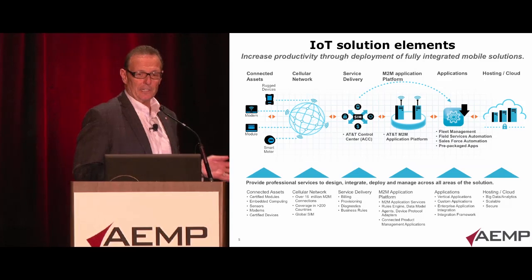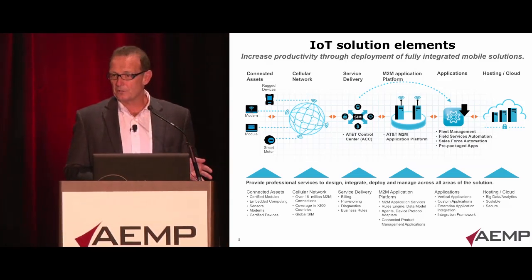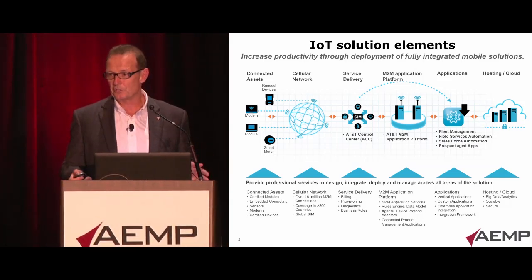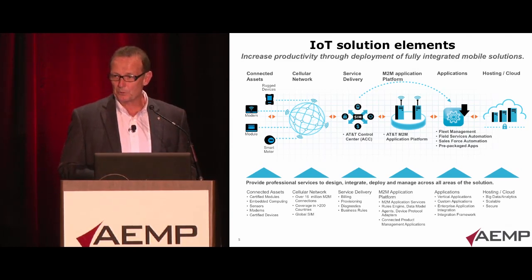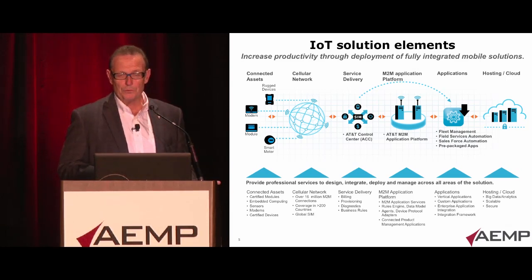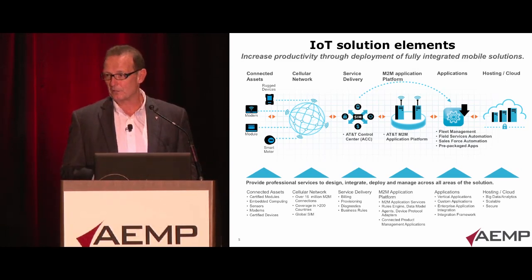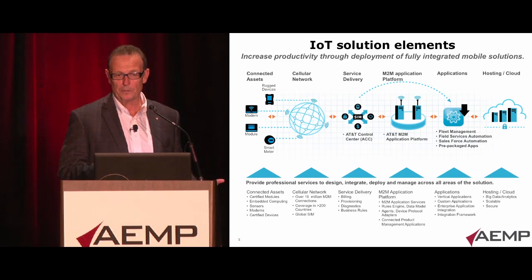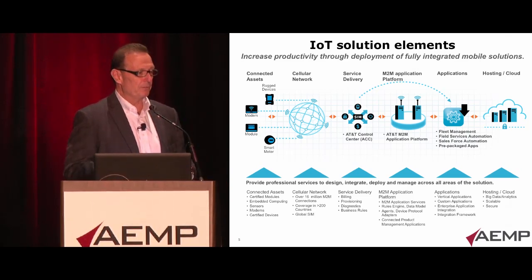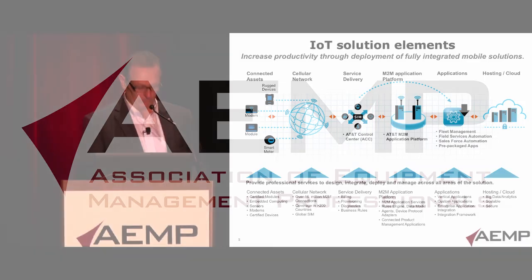I like to show this slide because it illustrates the key elements of an end-to-end solution. As you're evaluating your cost structure and building out your proof of concepts, you can start to make decisions about which of these pieces you want to own versus what you may want your provider to own. All of these are important, particularly for a scalable solution if you're looking at deploying hundreds or several thousand pieces of equipment.